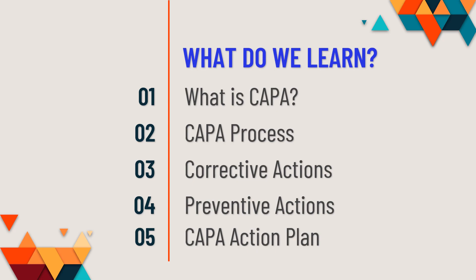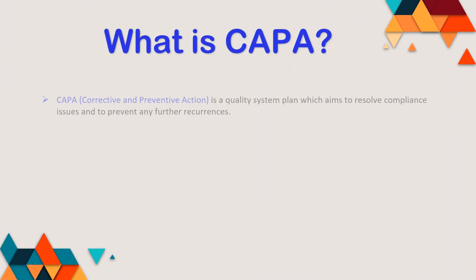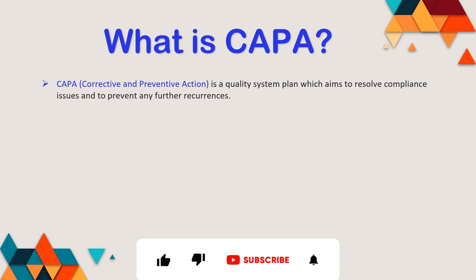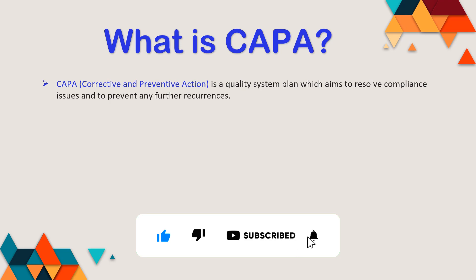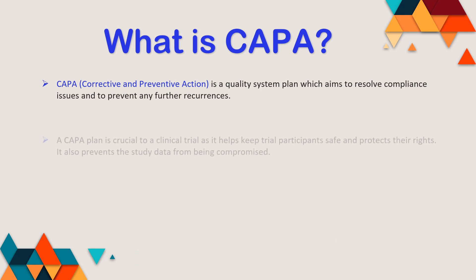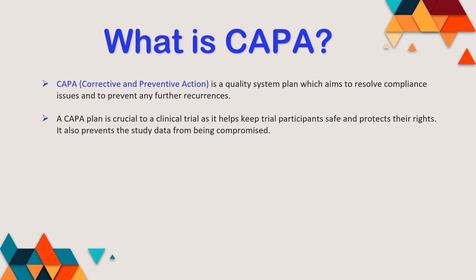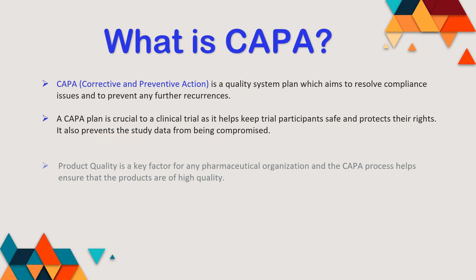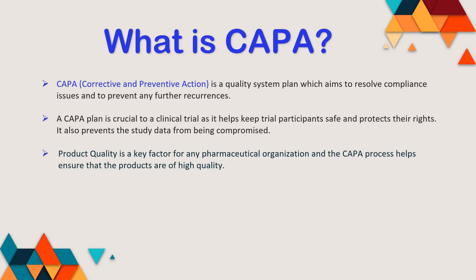In this session we are going to learn about what exactly is CAPA, how the CAPA process works, how corrective and preventive actions are implemented, and how the CAPA action plan is made. First and foremost, CAPA stands for Corrective and Preventive Action. It is a quality management system plan which aims to resolve compliance issues and to prevent any recurrence of the same issue. This plan is crucial to conduct a clinical trial — it helps reduce clinical trial participant risk, protecting their rights and welfare, and it also prevents study data from being compromised.